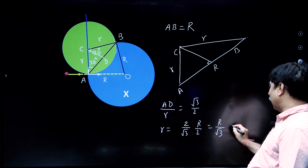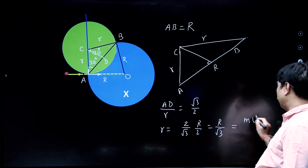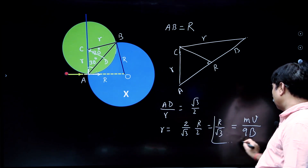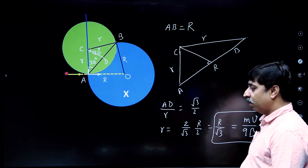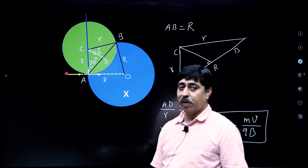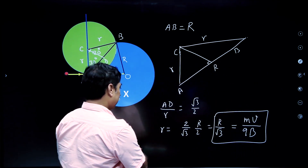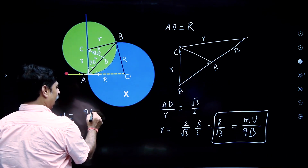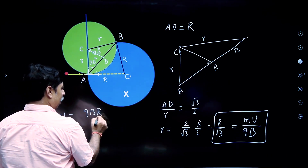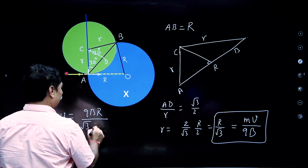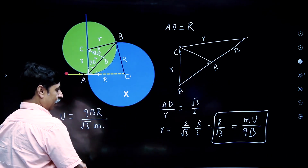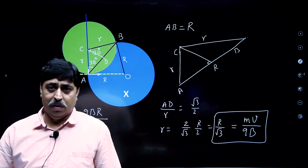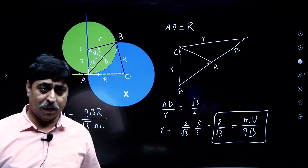Now, all of you know that if the particle is having speed V, then R/√3 must be the radius of the circular path. From here you get the value of V. V is nothing but QBR/(√3 · m). This is the answer to our question.